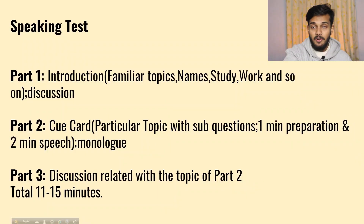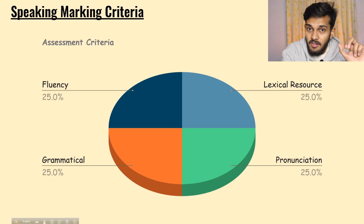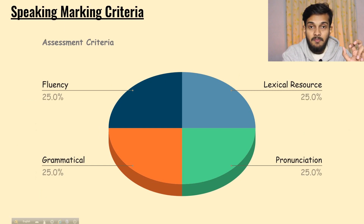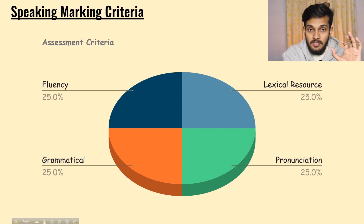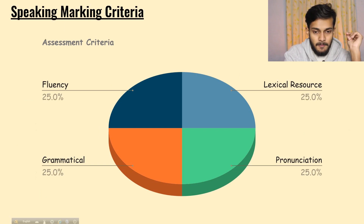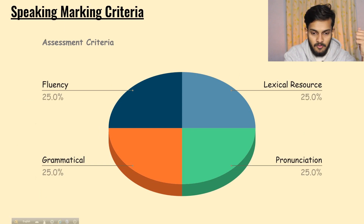After Part 3, your speaking test is done. The speaking test usually lasts about 11 to 15 minutes, varying from person to person. Now let's talk about the marking criteria — the basis on which the examiner will mark your overall speaking test. The four criteria are: Fluency, Lexical Resource, Grammatical Range, and Pronunciation.